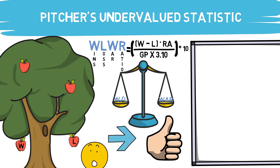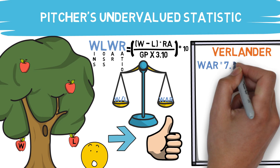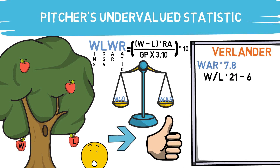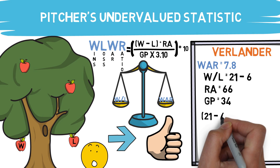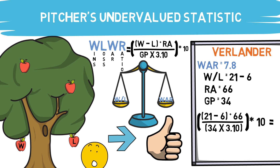Let's take a quick example. Last year, the WAR leader on the pitching side was Justin Verlander, with a WAR of 7.8. If you take his record, runs allowed, and games played and input them into the WLWR formula, it calculates out to 7.69 — pretty incredible. This somewhat meaningless statistic can be transformed into a number within about a tenth of his cumulative WAR. Now, I recognize this statistic isn't necessarily beneficial for predicting or analyzing player performance, but the accuracy I found across the board was impressive — and it may just be a fun one to play around with on your own.